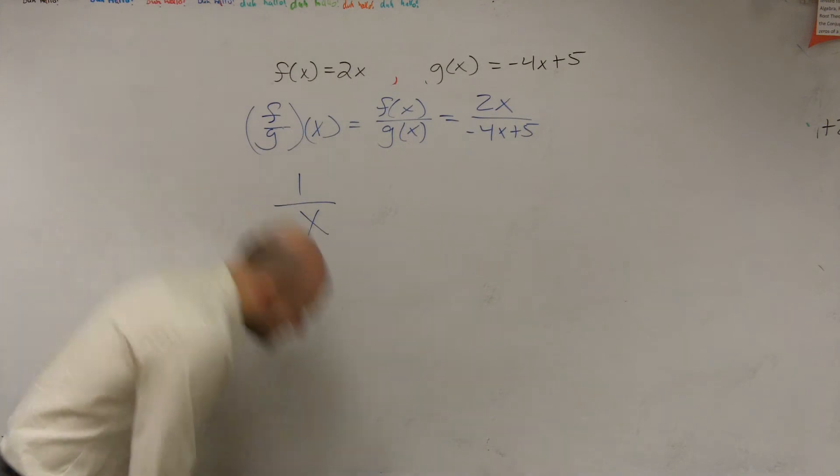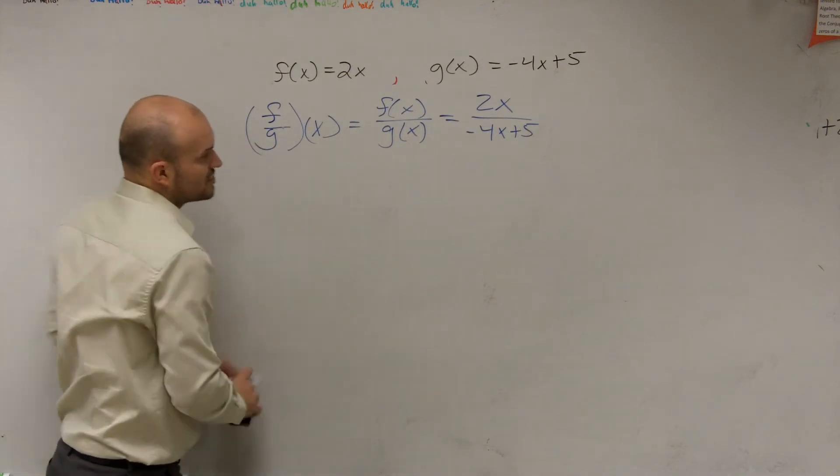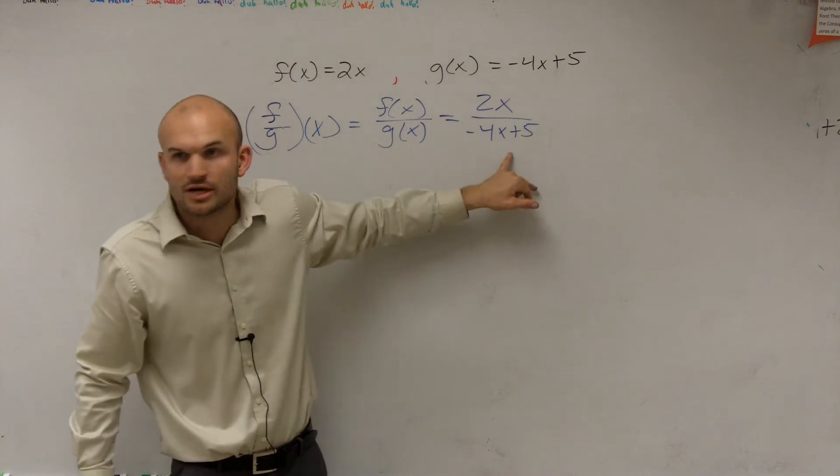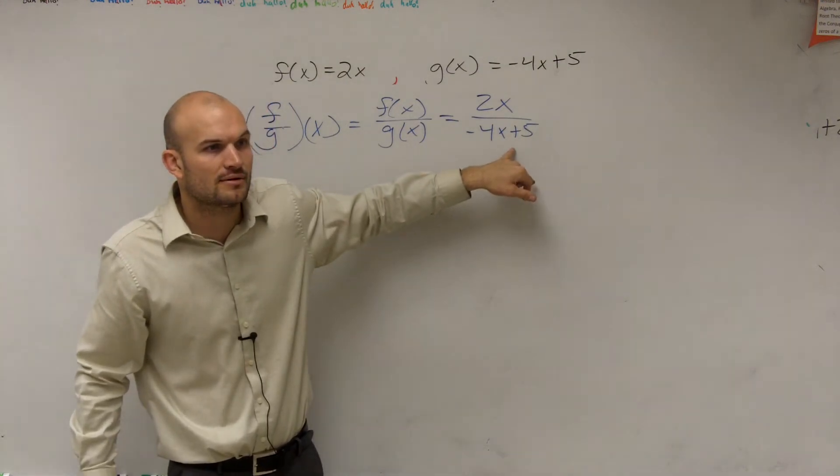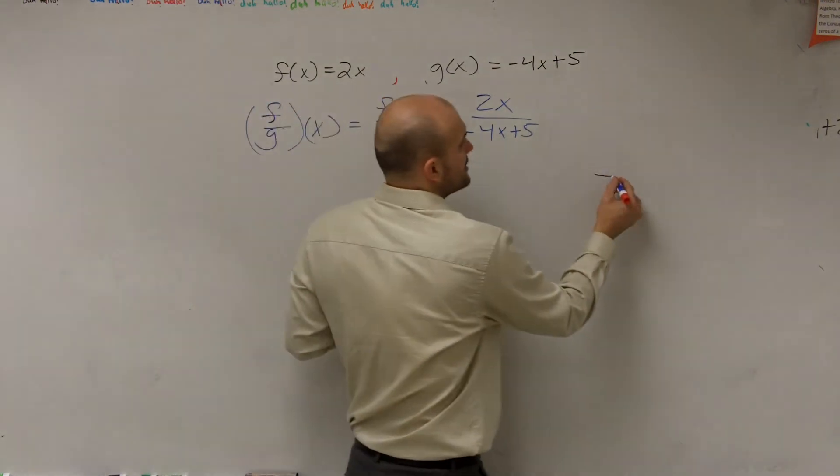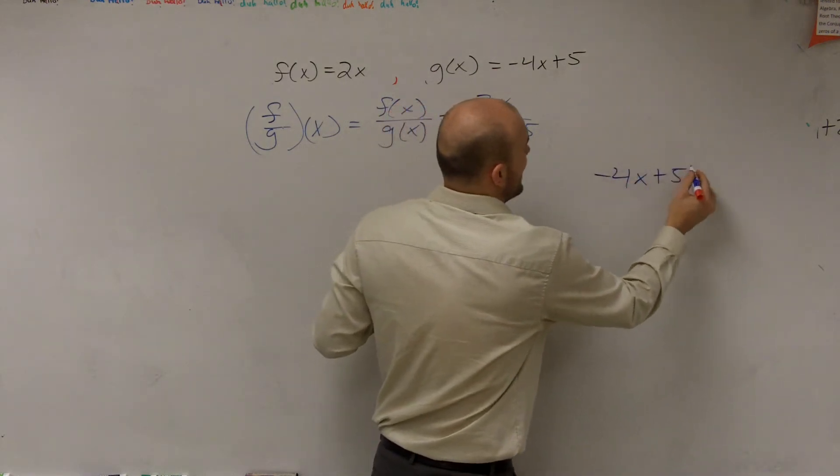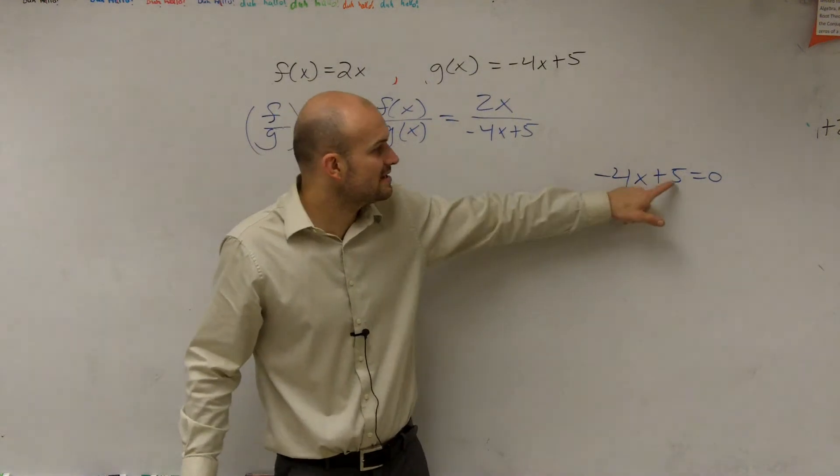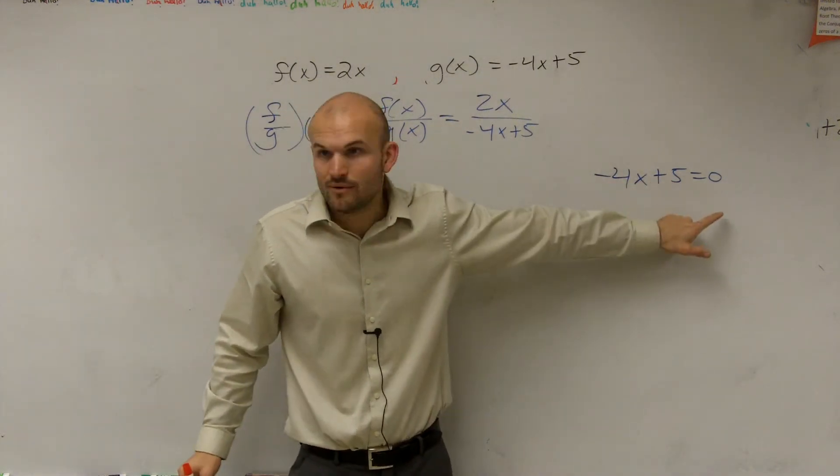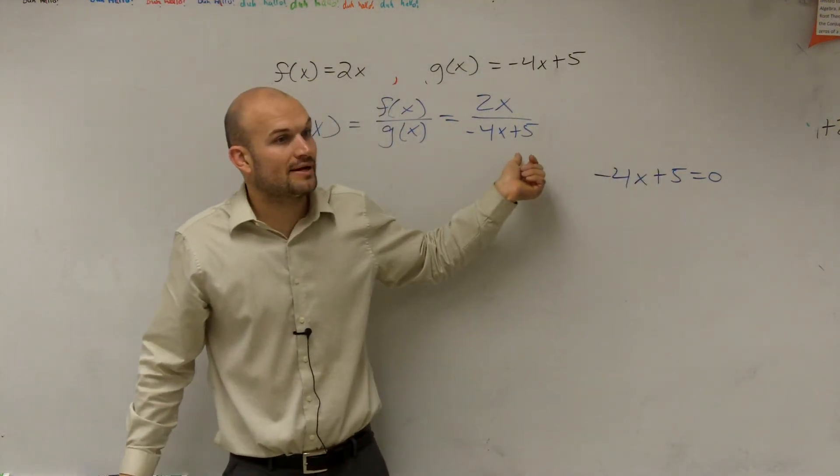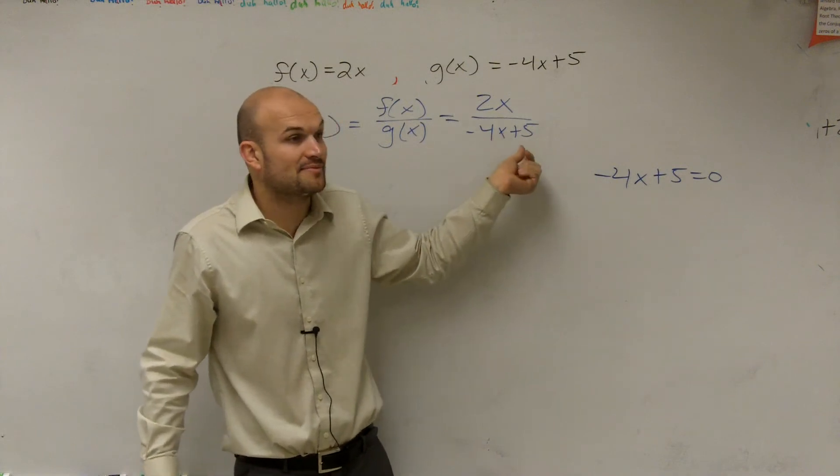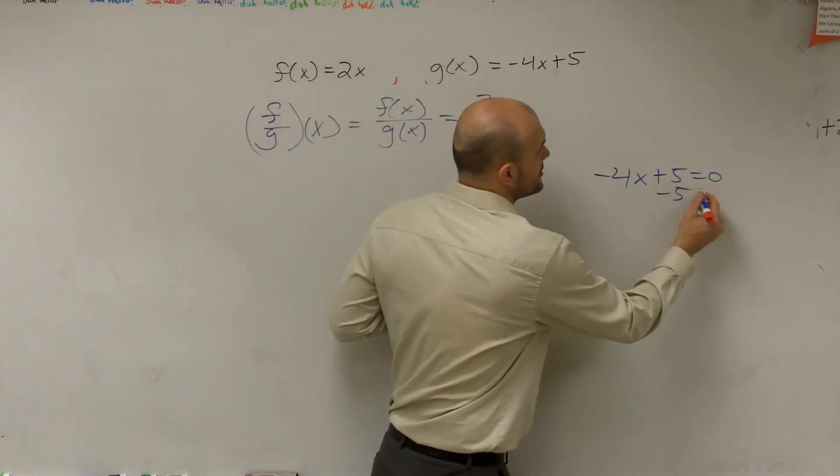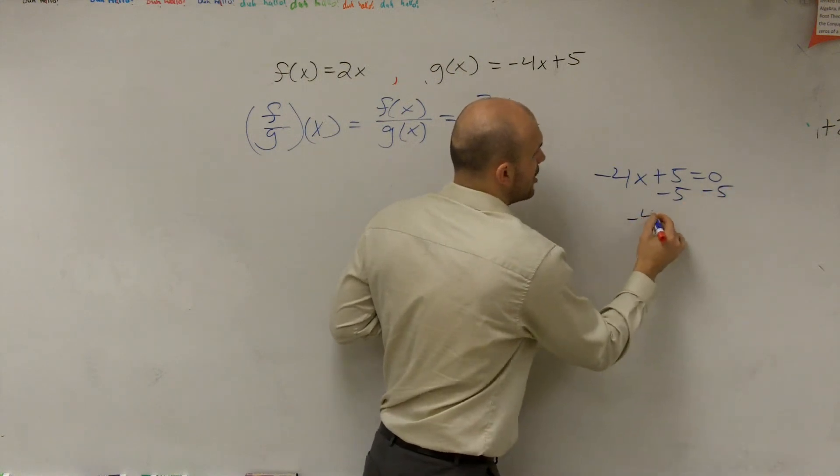So what we need to do is say, when we look at this function and say, all right, 2x divided by negative 4x plus 5, what values are going to make my denominator zero? What you need to do is take negative 4x plus 5 and set it equal to zero. Because whatever makes this equal to zero cannot be on my denominator, right? x can be all numbers, except whatever number is going to make my denominator equal to zero. So then what I do is I solve for x.